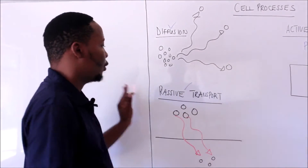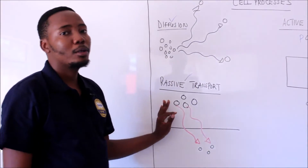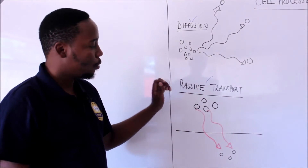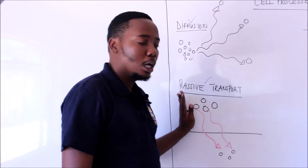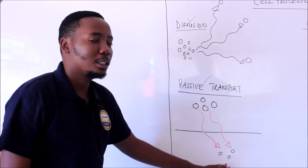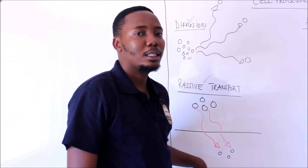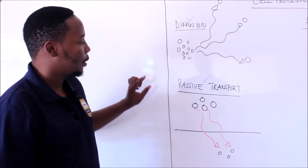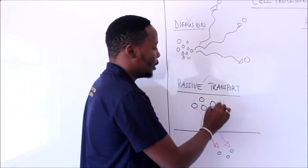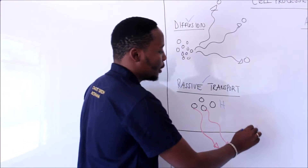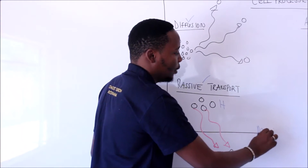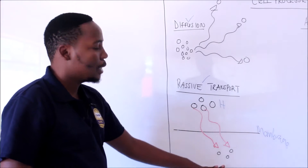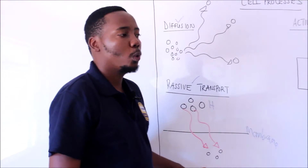The second one is what we call passive transport. When talking about passive transport, molecules move from an area of high concentration to an area of low concentration, down their concentration gradient. For example, if you look at these molecules here, they are at a high concentration in this region and then they will cross this membrane.